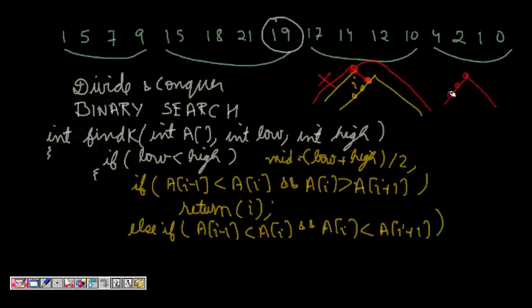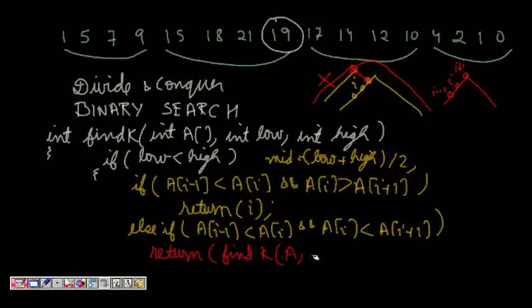Let's see why. If this was the element, here this is i, this is i+1, i-1. So here again, i-1 is less than a[i] and a[i] is less than i+1. But this doesn't mean that it cannot be the peak. So I start from - what happens? I will say return find k, and where will I search now? And I will pass the array. And now where should I search from? Mid+1 to high. So this I will do.